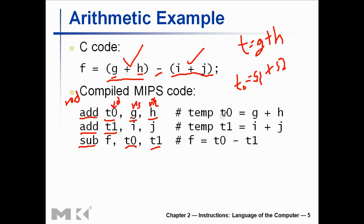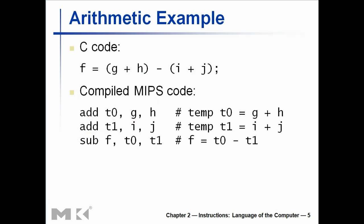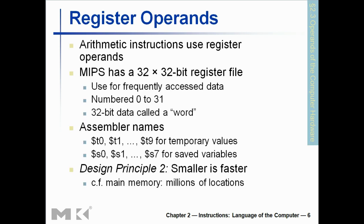This is a very simple MIPS execution. Now for register operands — some theoretical stuff. It's a 32 by 32-bit register, meaning you have 32 registers numbered 0 to 31, just like binary. A 32-bit data is called a word, so a word equals 32 bits or 4 bytes. The t0, t1 are temporary values. You remember in the last slide t0 equal to g plus h — you cannot write g plus h directly in MIPS. What you write is s0, s1, s2, and don't forget the dollar sign before every single variable.